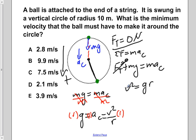But we only want v, so we're going to take the square root of both sides. This then gives us that the velocity is equal to the square root of g times r.